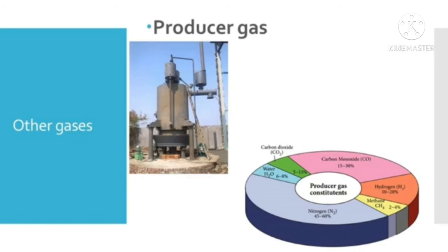Apart from natural gas, there are some other gases used as fuel: producer gas, coal gas, biogas and water gas. Producer gas is a gaseous mixture of carbon monoxide and nitrogen. It is produced by passing air mixed with steam over red-hot coke at a temperature of 1,100 degrees Celsius. Producer gas is used as an industrial fuel for iron and steel manufacturing.